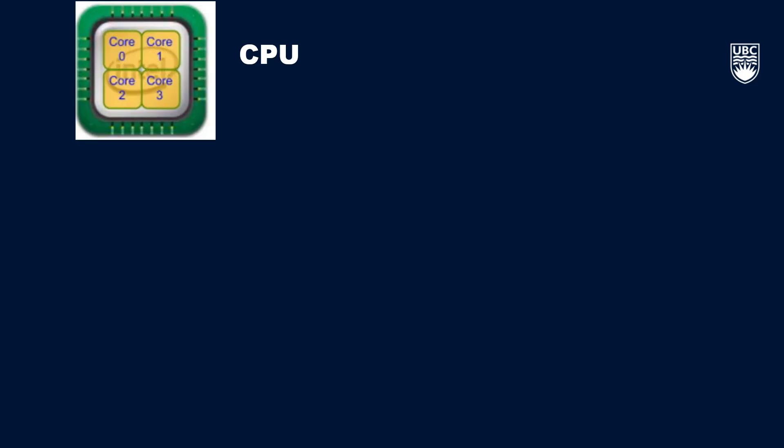Going back to our discussion on CPUs, CPUs are responsible for carrying out a computer's tasks. This is done by something called CPU cores. A CPU core is an individual processing unit of a computer's CPU and receives and executes a single computing task. Most personal computers have between two and eight cores, and while one core is carrying out one task, others can work on different tasks at the same time.